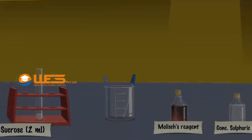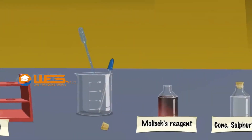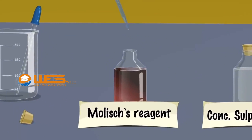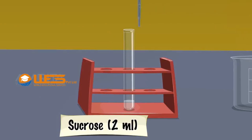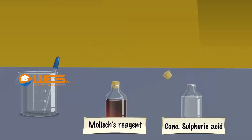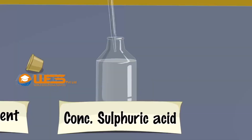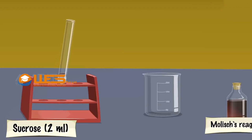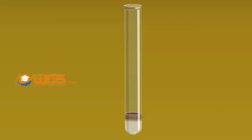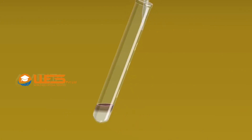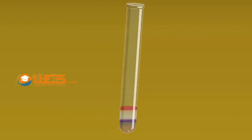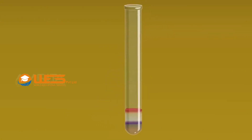Sucrose. Take Molisch's reagent using a dropper. Add about 6 drops of Molisch's reagent into a test tube containing 2 ml aqueous solution of sucrose. Using a dropper, take a few drops of concentrated sulphuric acid. Add it slowly along the side of the test tube without mixing. A red-violet ring is produced at the junction of the two layers — acid layer and test layer — indicating the presence of carbohydrates.